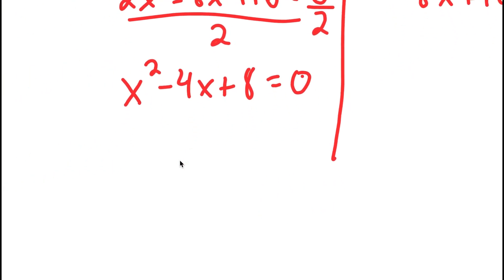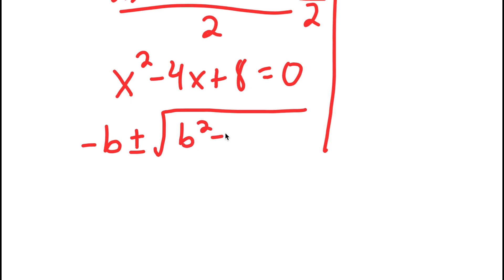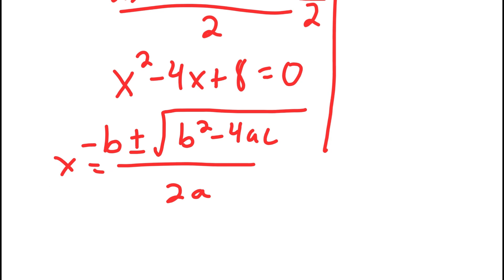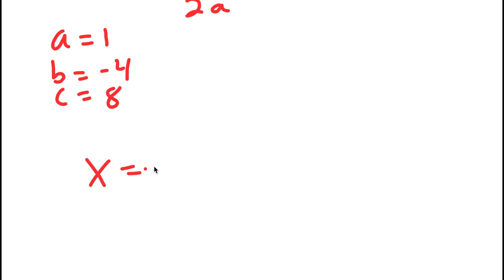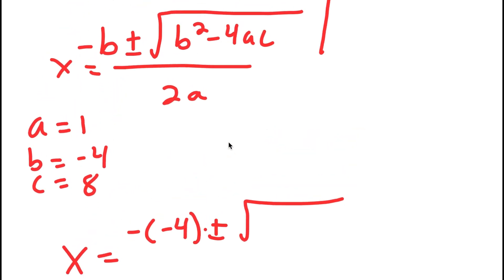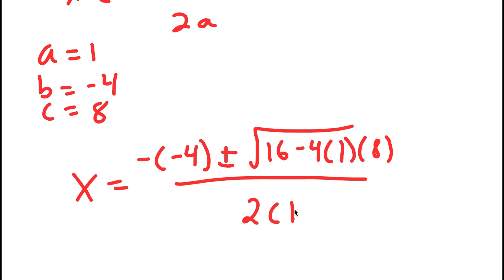I can use the quadratic formula to solve this since it's a quadratic equation. The quadratic formula is negative b plus or minus the square root of b squared minus 4ac all over 2a. In this case, a is 1, b is negative 4, and c is 8. So I get x equals negative of negative 4 plus or minus the square root of negative 4 squared, which is 16, minus 4 times 1 times 8, all over 2 times 1.